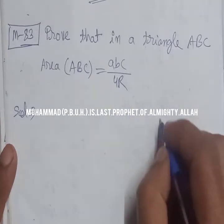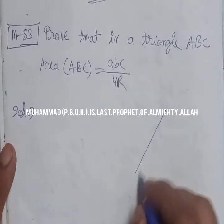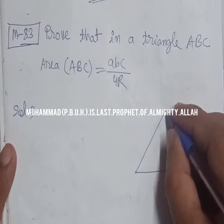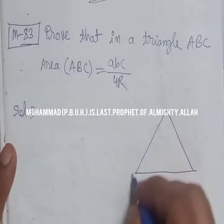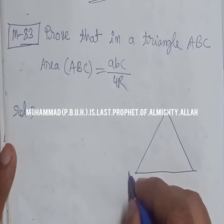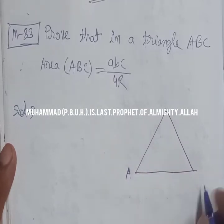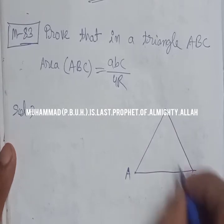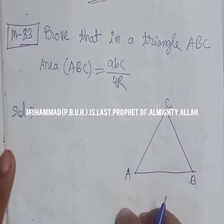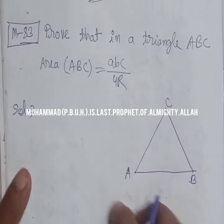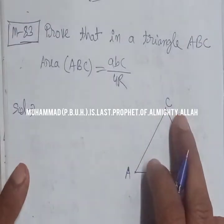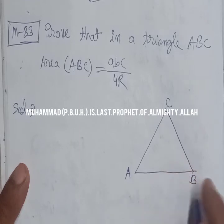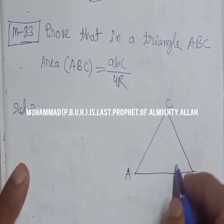We know that the area of any triangle can be found. The name of the triangle is ABC. For finding the area of triangle ABC, we have to find the base and the altitude.